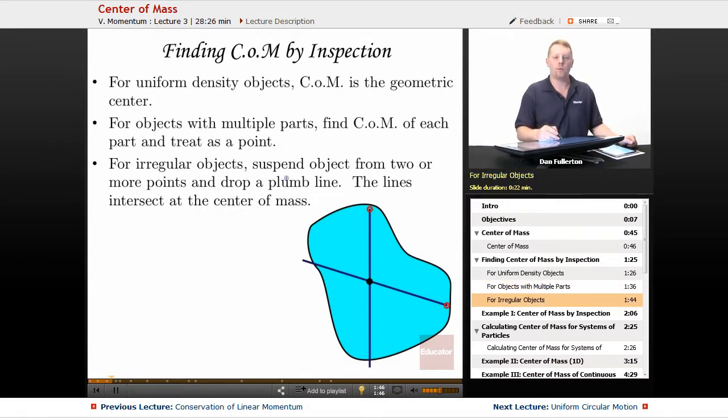For irregular objects, one way you can find it experimentally is to suspend the object from two or more points and drop a plumb line. The lines are always going to intersect at the center of mass. So if you attach it by a couple points, drop a plumb line from it, wherever they cross, that would be your center of mass of the object.